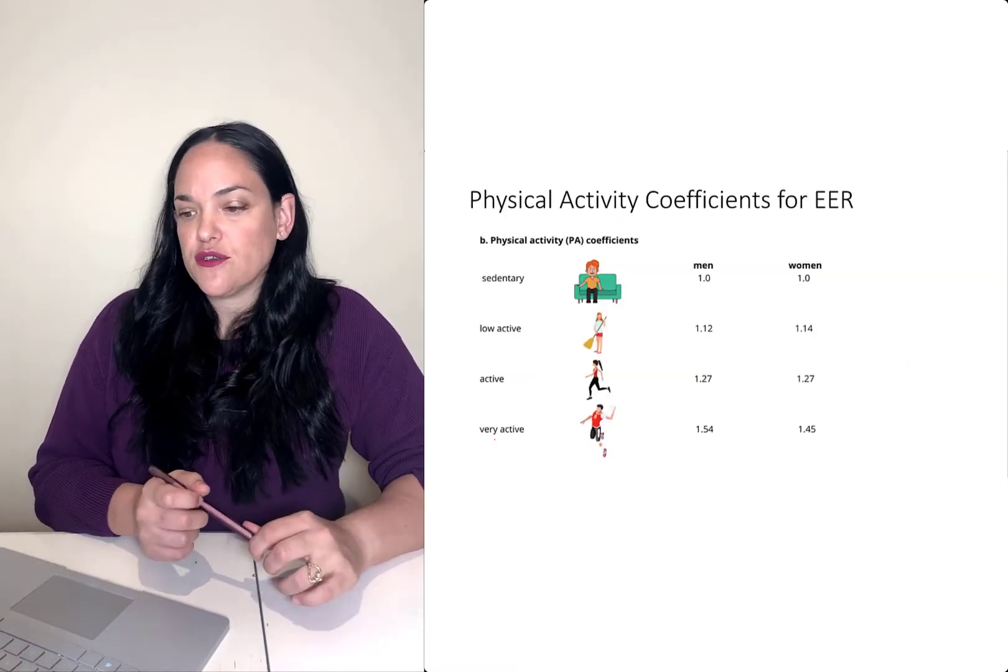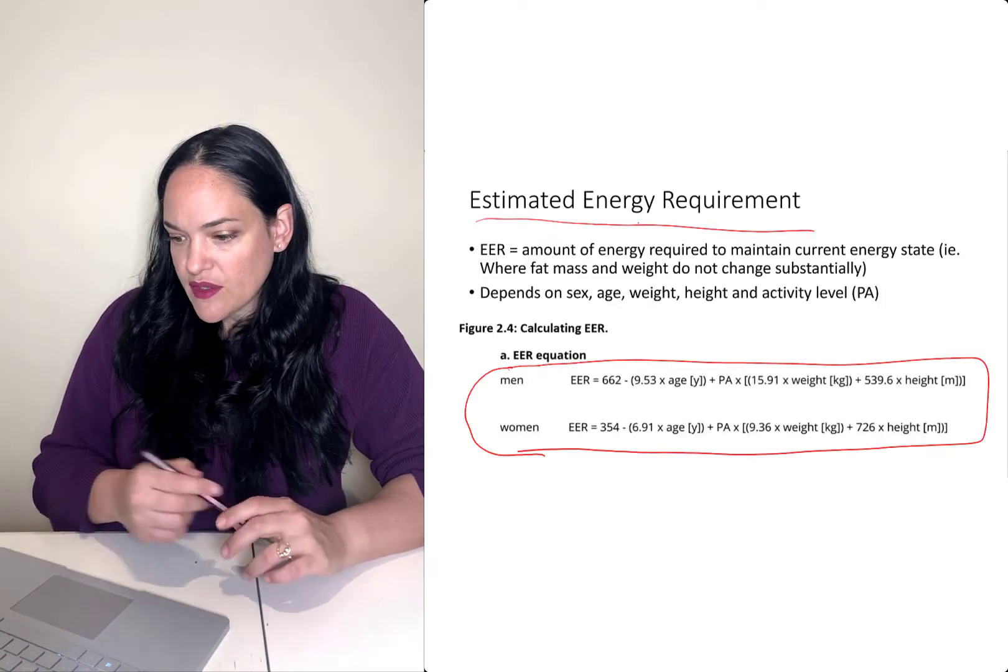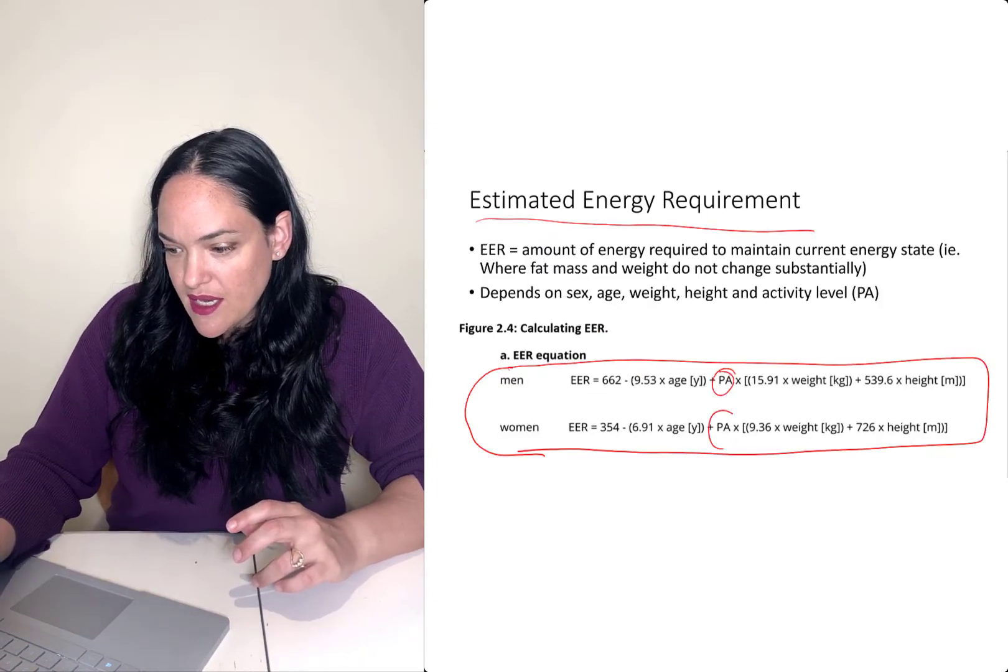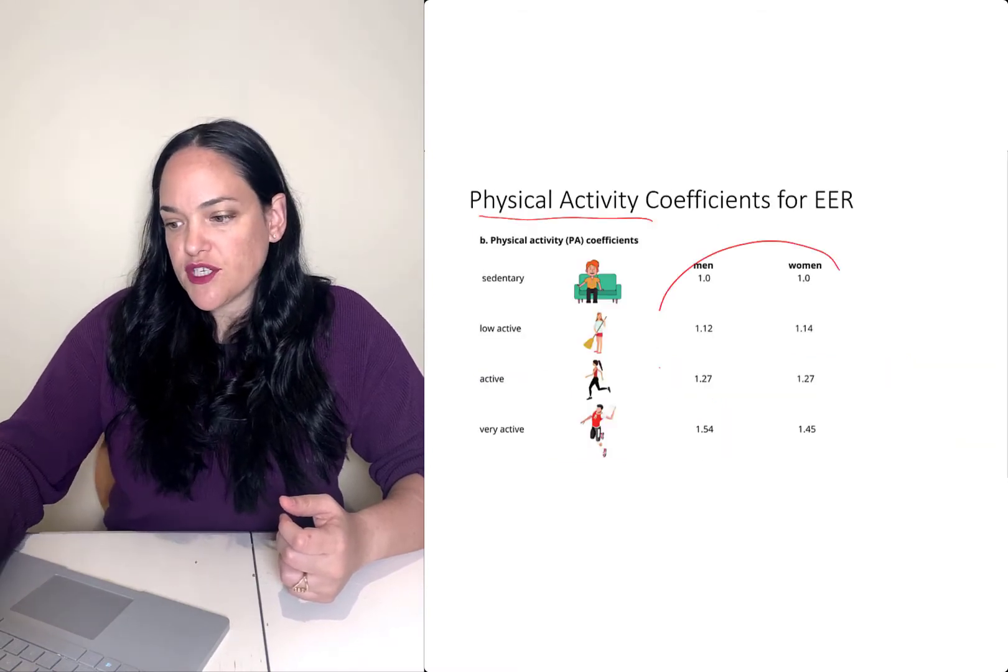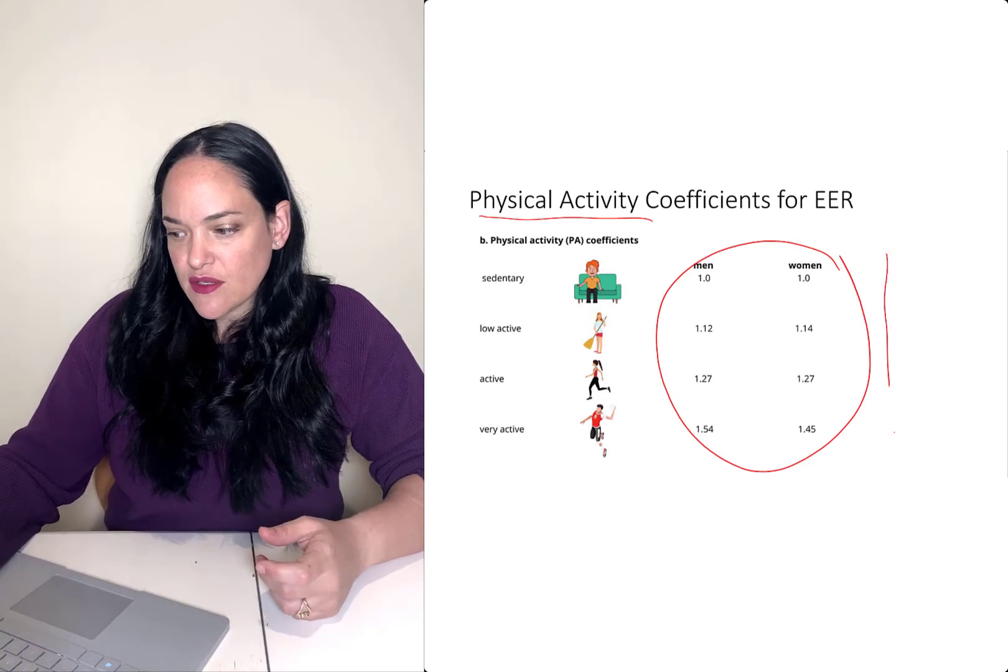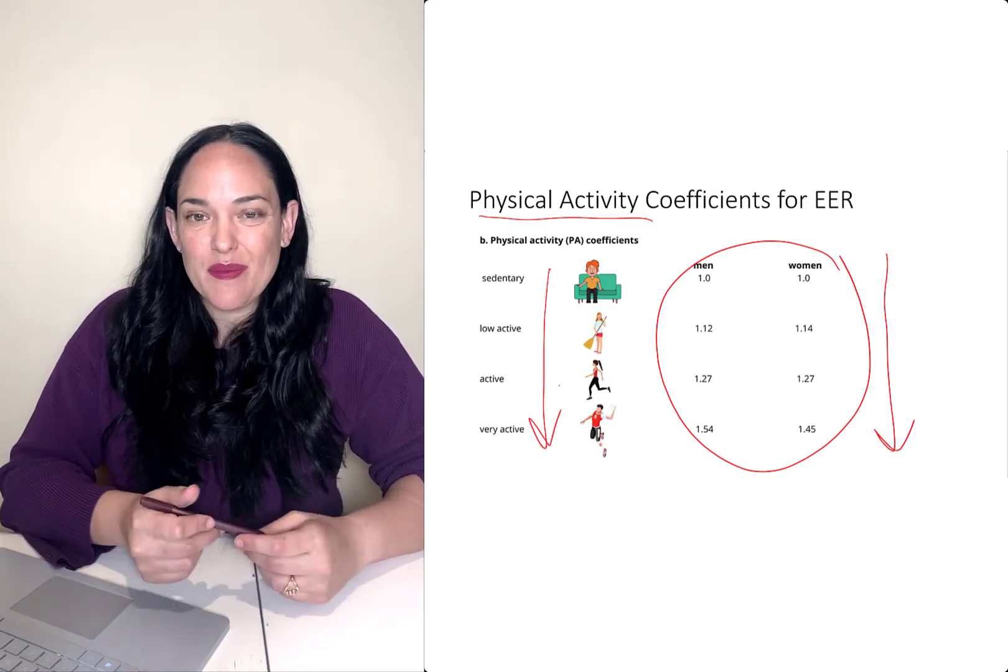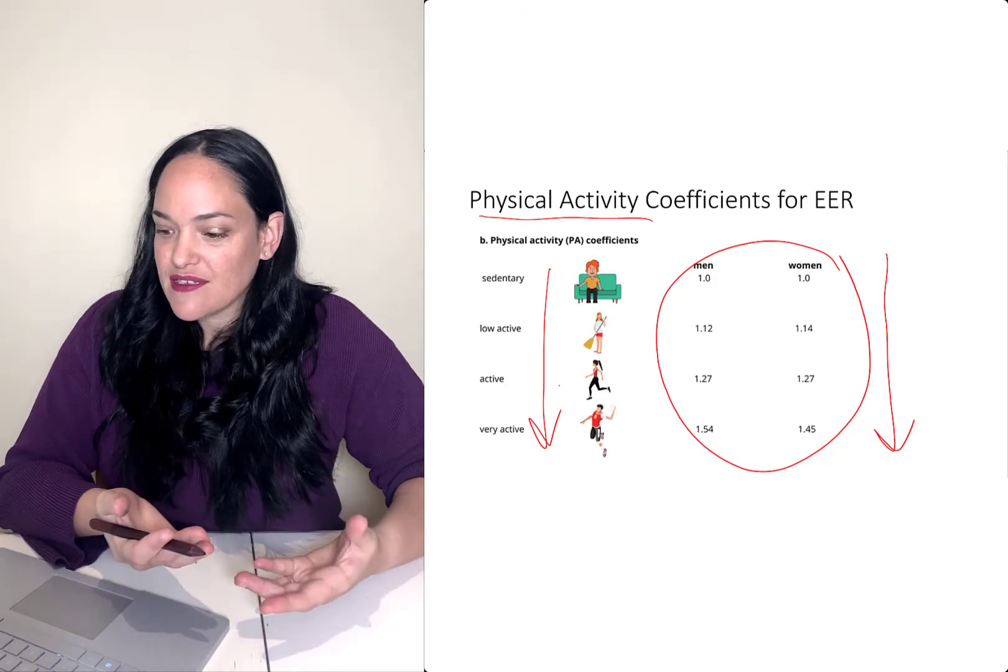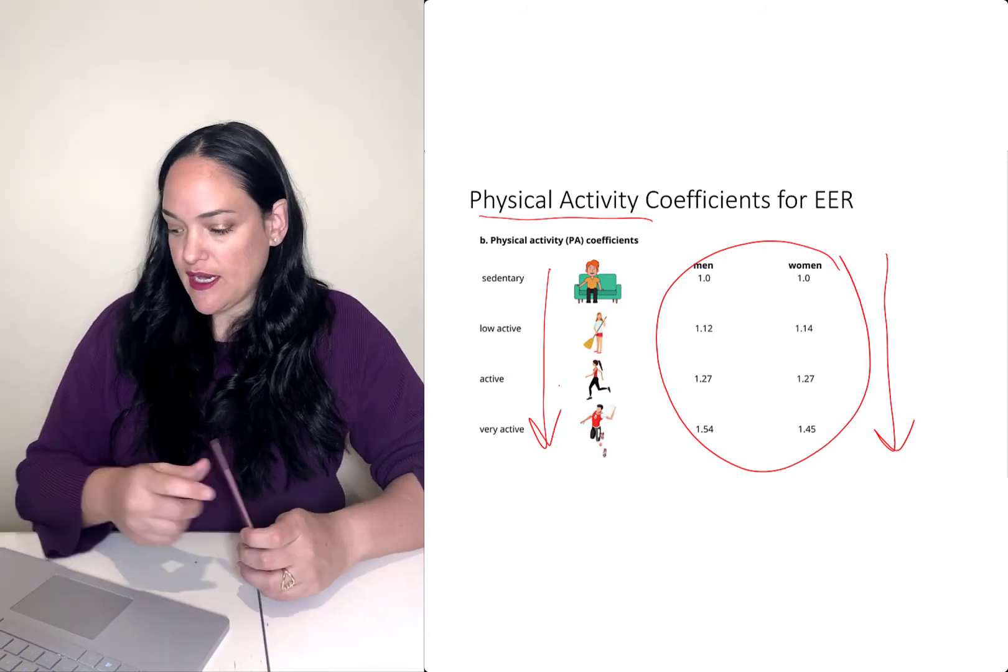Something you'll need to calculate your EER is a physical activity coefficient. So if you look back at the equation here where it says PA, that's where you would plug in one of these coefficients that's found on this slide here. And basically, you'll notice that the coefficients get larger as activity levels go up. And this basically shows that the more active you are, the more calories you need in order to maintain your particular size.